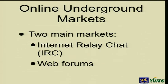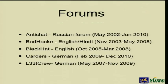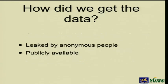There are primarily two underground networks: IRC channels and web forums. In this talk we are only going to focus on web forums. We had leaked datasets of five forums: the first was Antichat, a Russian forum; we had two English language forums, BadHack and BlackHack; and two German language forums, Carders and Leech Crew. These datasets were leaked by anonymous people and when we collected them, they were publicly available on RapidShare.